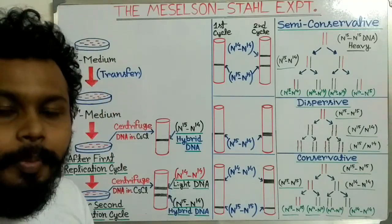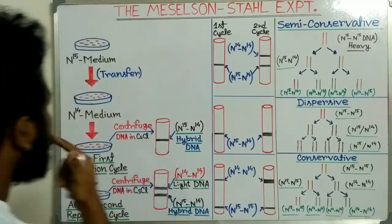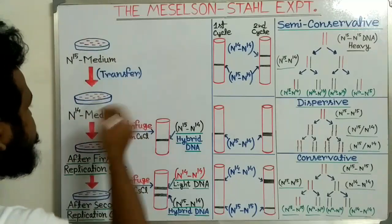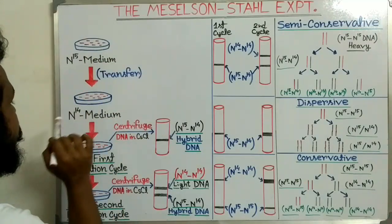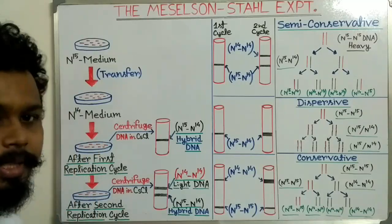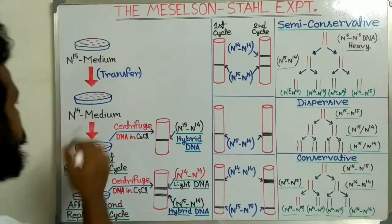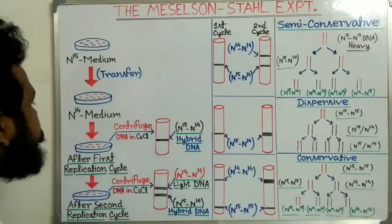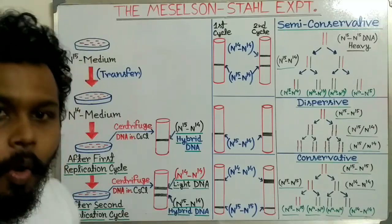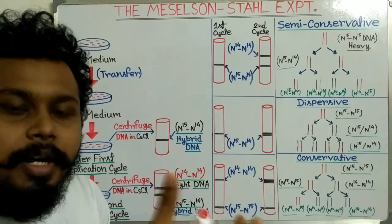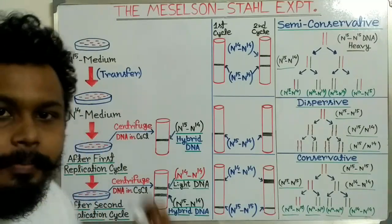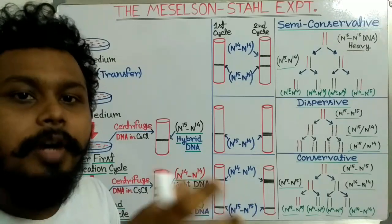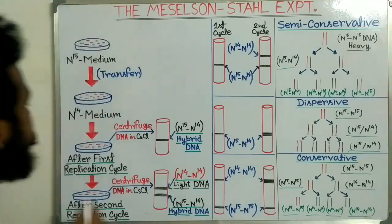So after many generations, all the DNA will contain the heavy nitrogen N15 to make DNA components. Then those bacterial cells are transferred into a new medium containing N14, the normal isotope of nitrogen. Now all the DNA starts to take up the normal N14 nitrogen to make new DNA molecules.